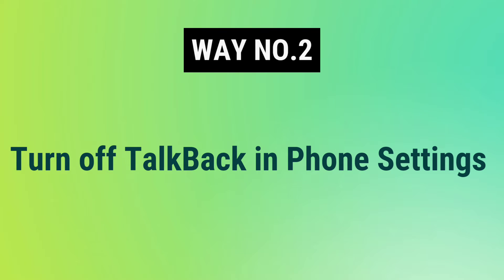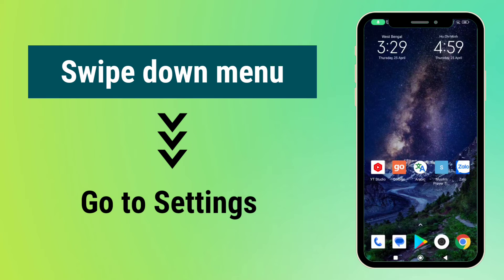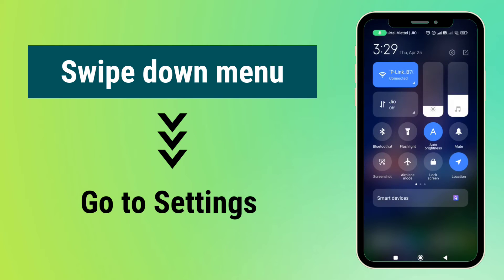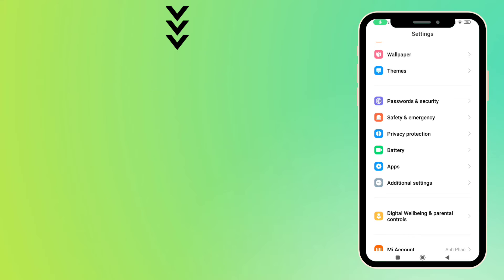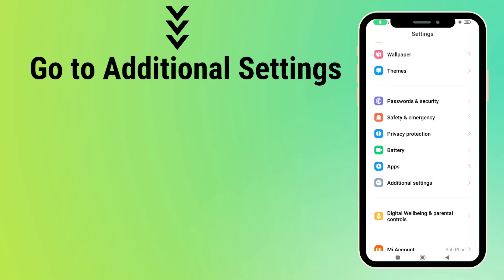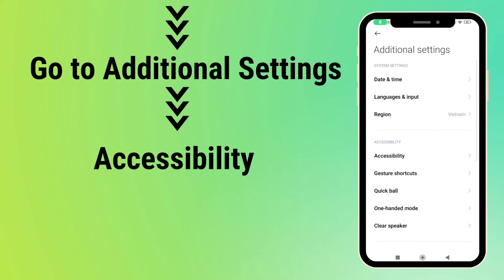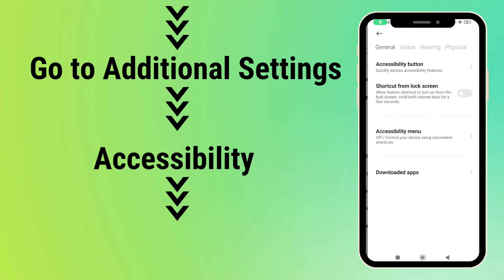Way number two: turn off TalkBack in your phone settings. Swipe the menu card down from the top of the phone, then go to Settings, next go to Additional Settings, and now find the Accessibility settings and enter it.